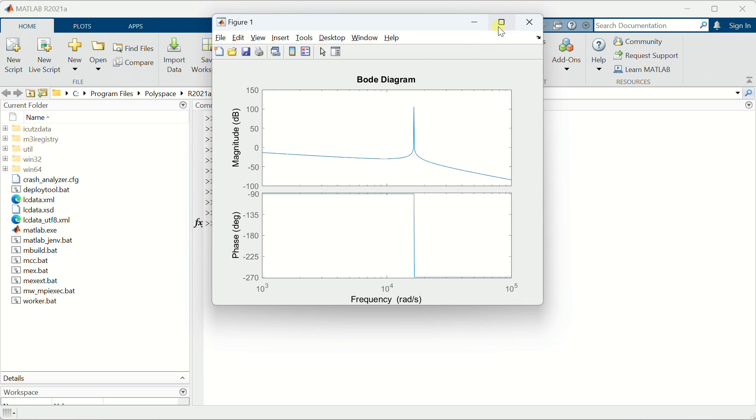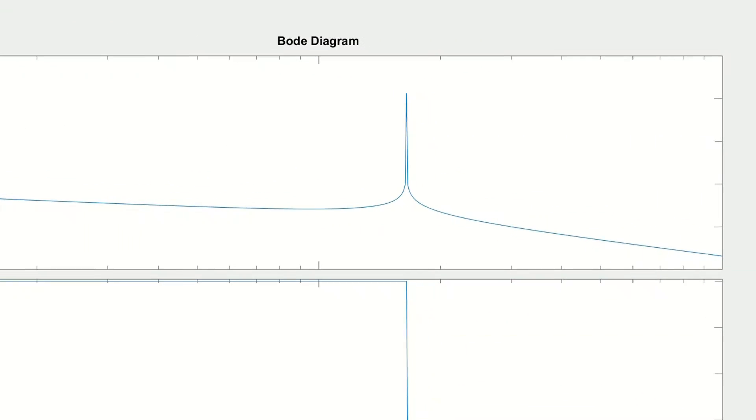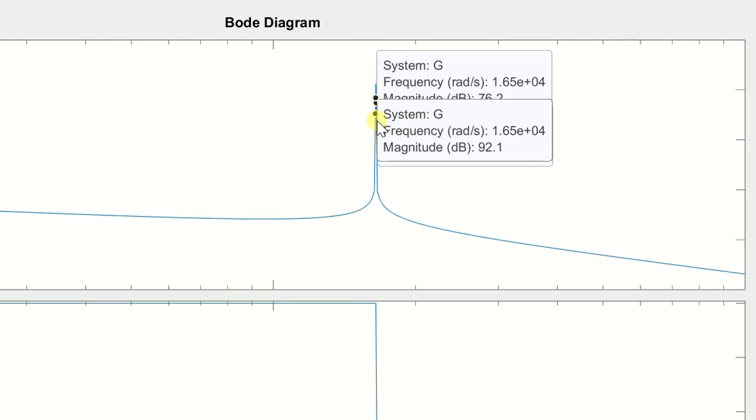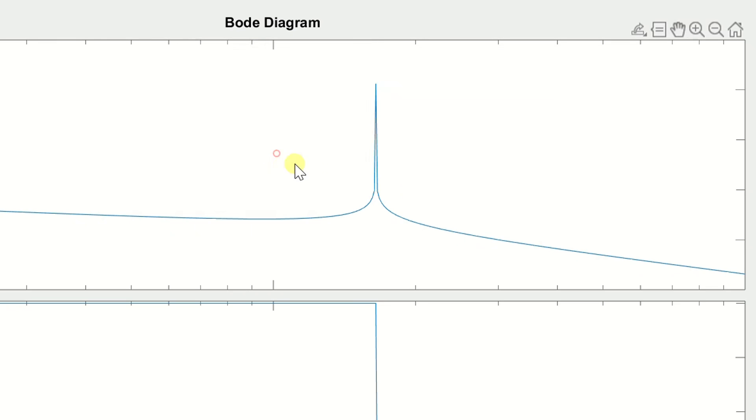This represents the Bode plot for the LCL filter. Upon examining the plot, it becomes evident that the magnitude of the grid current is notably higher at a specific frequency, precisely matching the resonant frequency we calculated earlier.